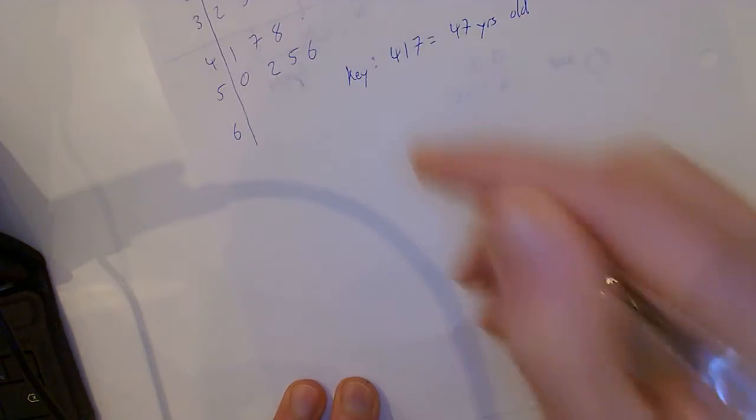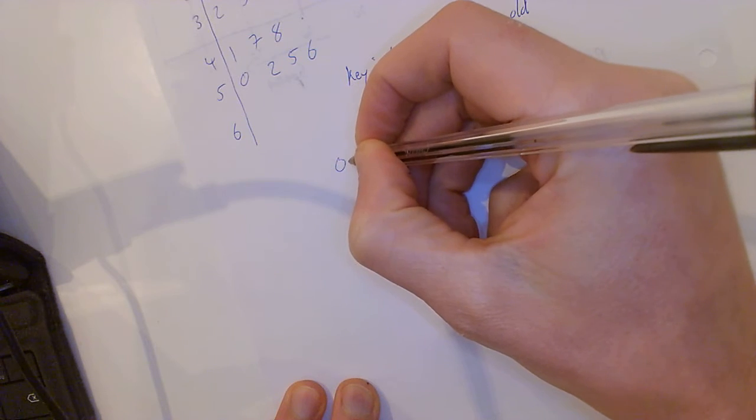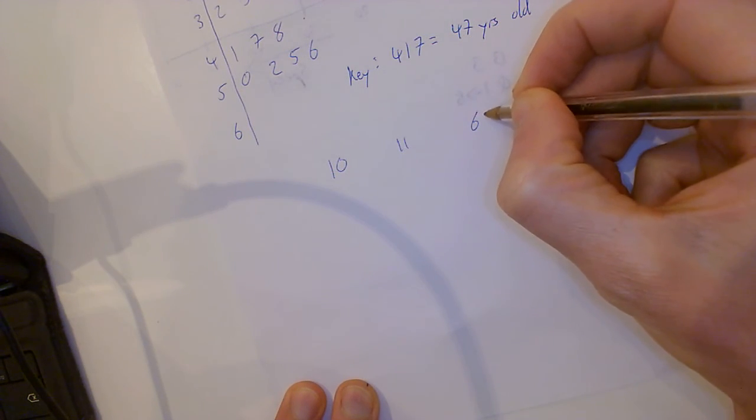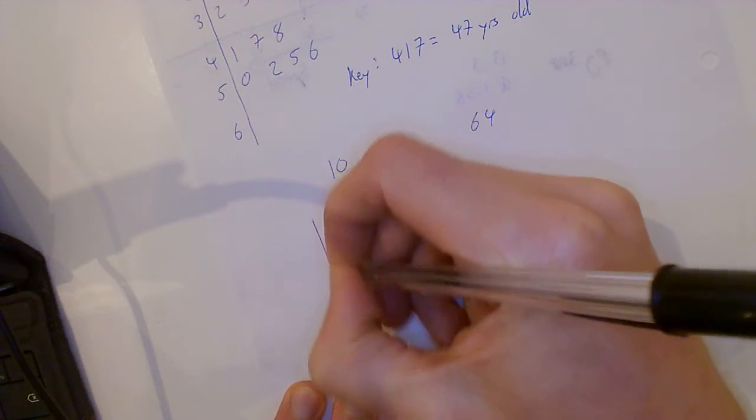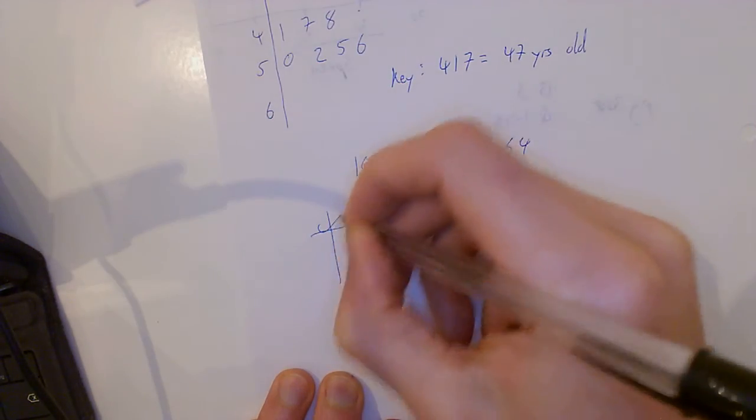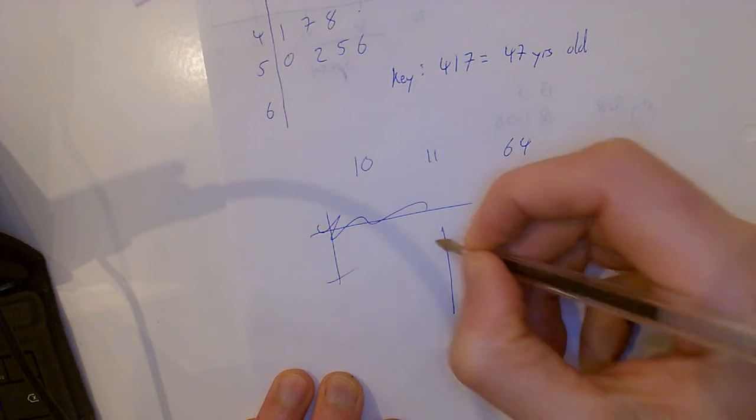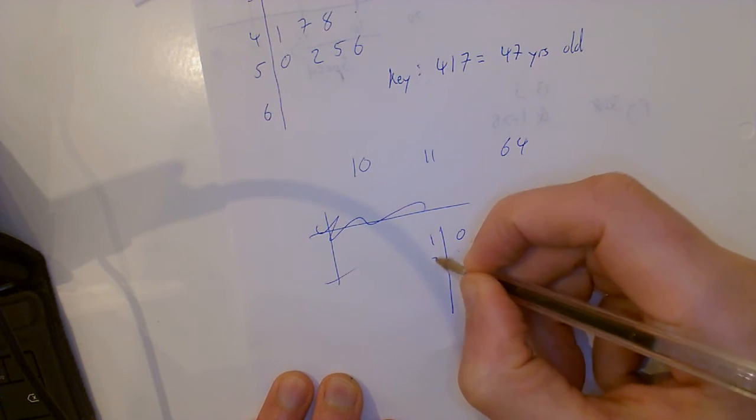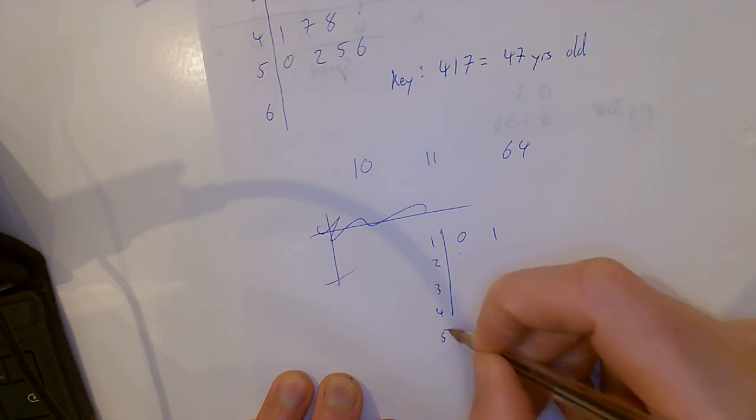Now if I was given a piece of data that had 10, 11, and 64, so 1|0, 1|1. I'm not going to go 6 next, I go 2, 3, 4, 5, 6.